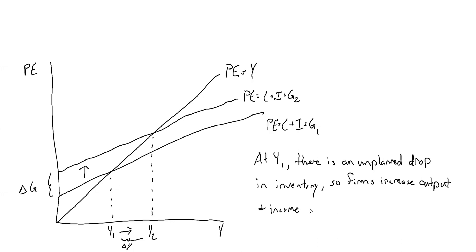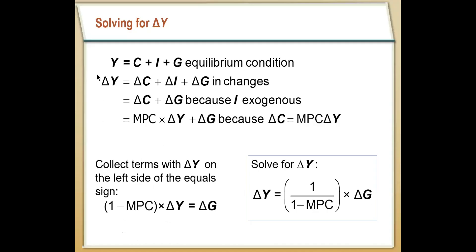Income is going to rise to a new equilibrium. This increase in government spending has a greater effect on income than just that initial ΔG, which means there's going to be some kind of multiplier effect associated with government spending. We can try to calculate that based on the equations we have. Starting with the equilibrium condition Y equals C plus I plus G, we can convert that to changes: the change in income equals the change in consumption plus the change in investment plus the change in G.